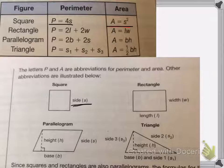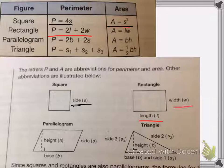On this next one, the rectangle, the rectangle is 2 times the length plus 2 times the width, so length and width, and the area is length times width.